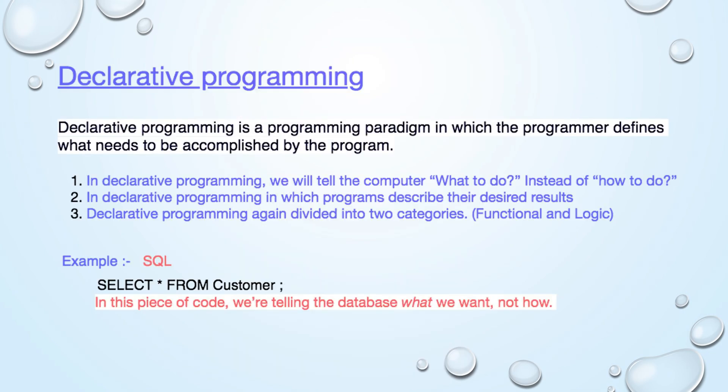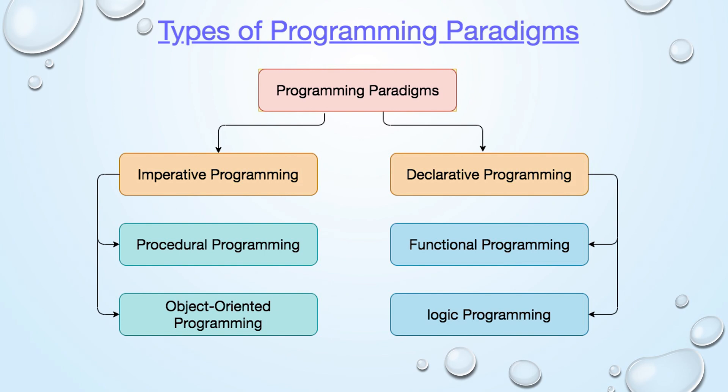Declarative programming. In declarative programming, we tell the computer what to do rather than how to do it. We shall always focus on output or result in declarative programming. In this sample code, we are telling the database what we want rather than how it should do it. Functional and logical programming are the two main sub-types.